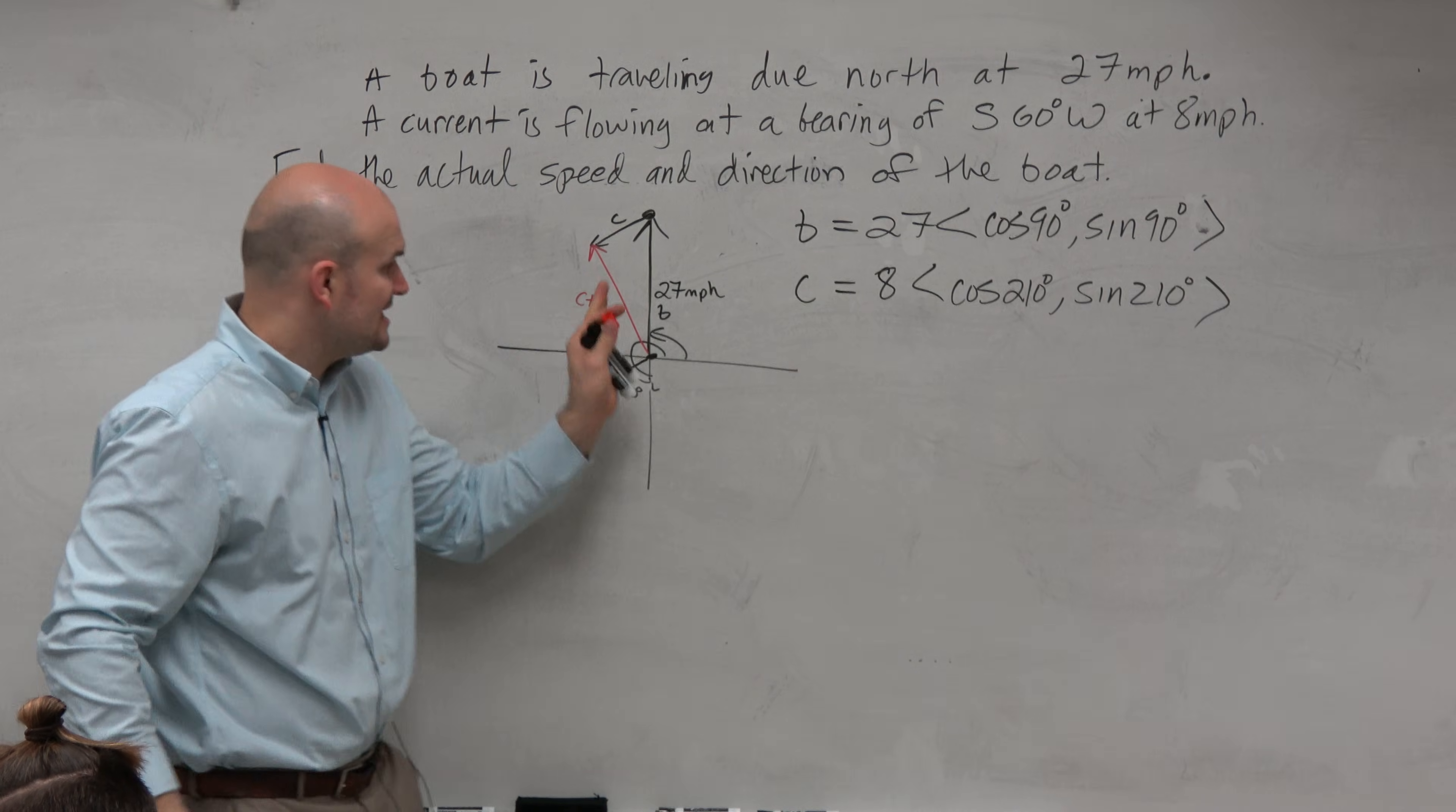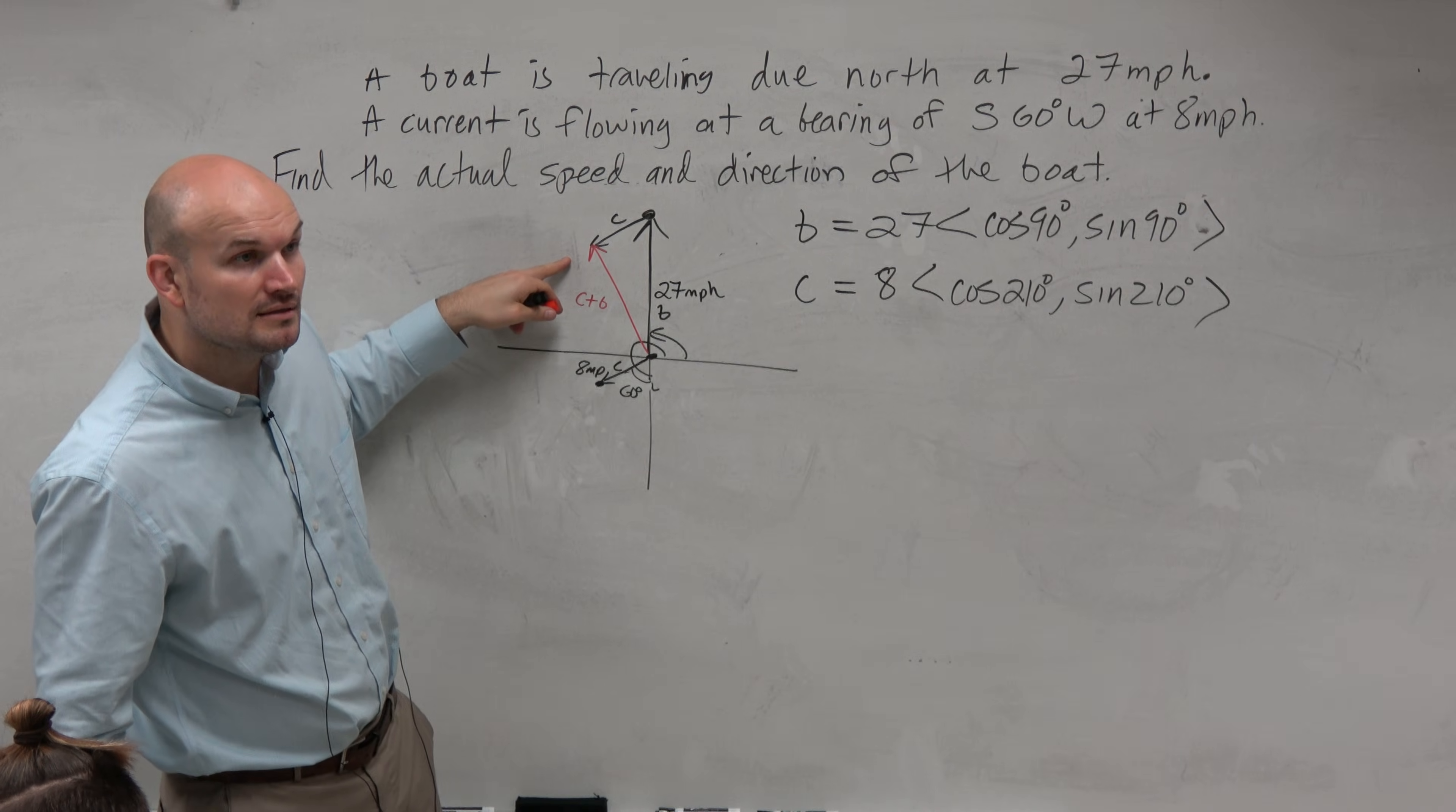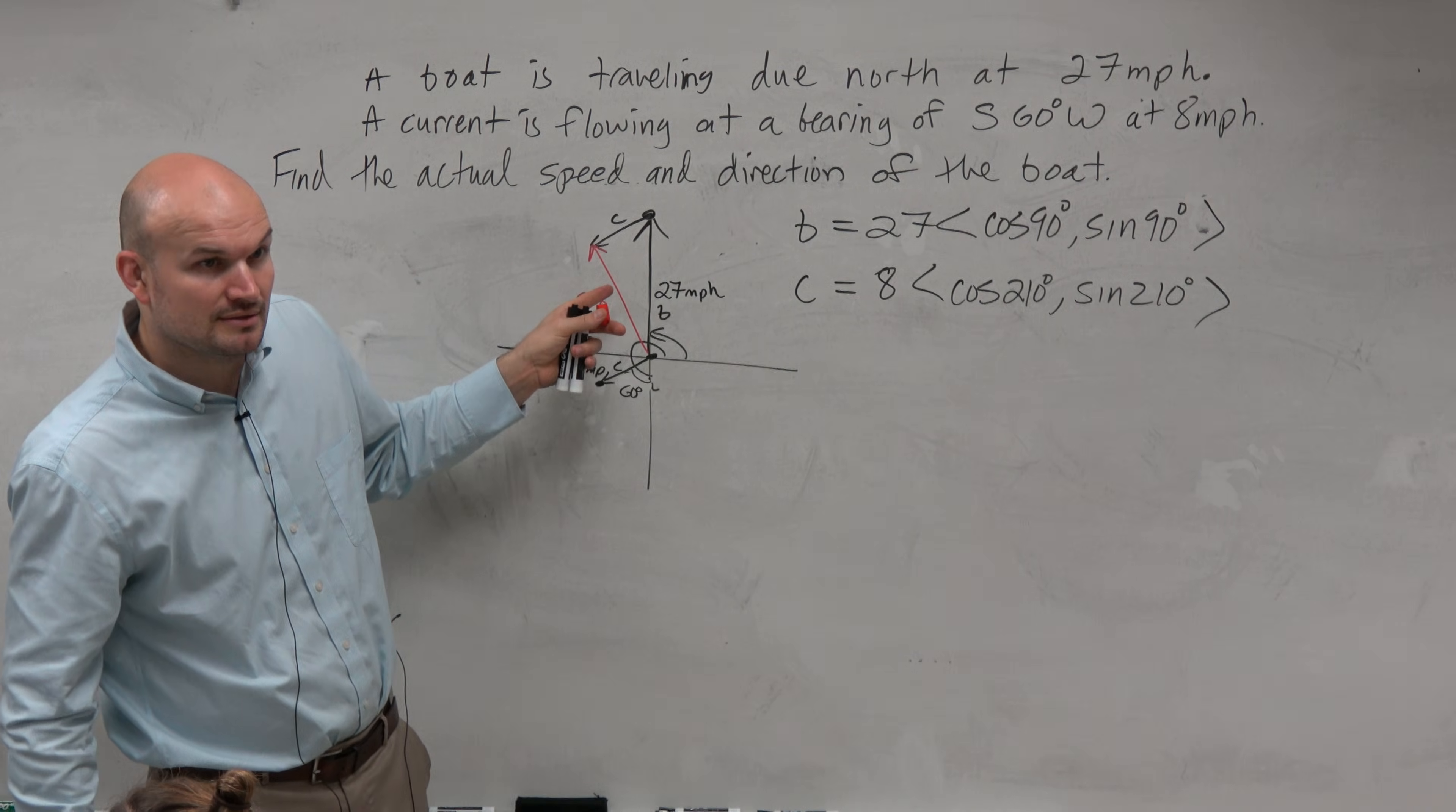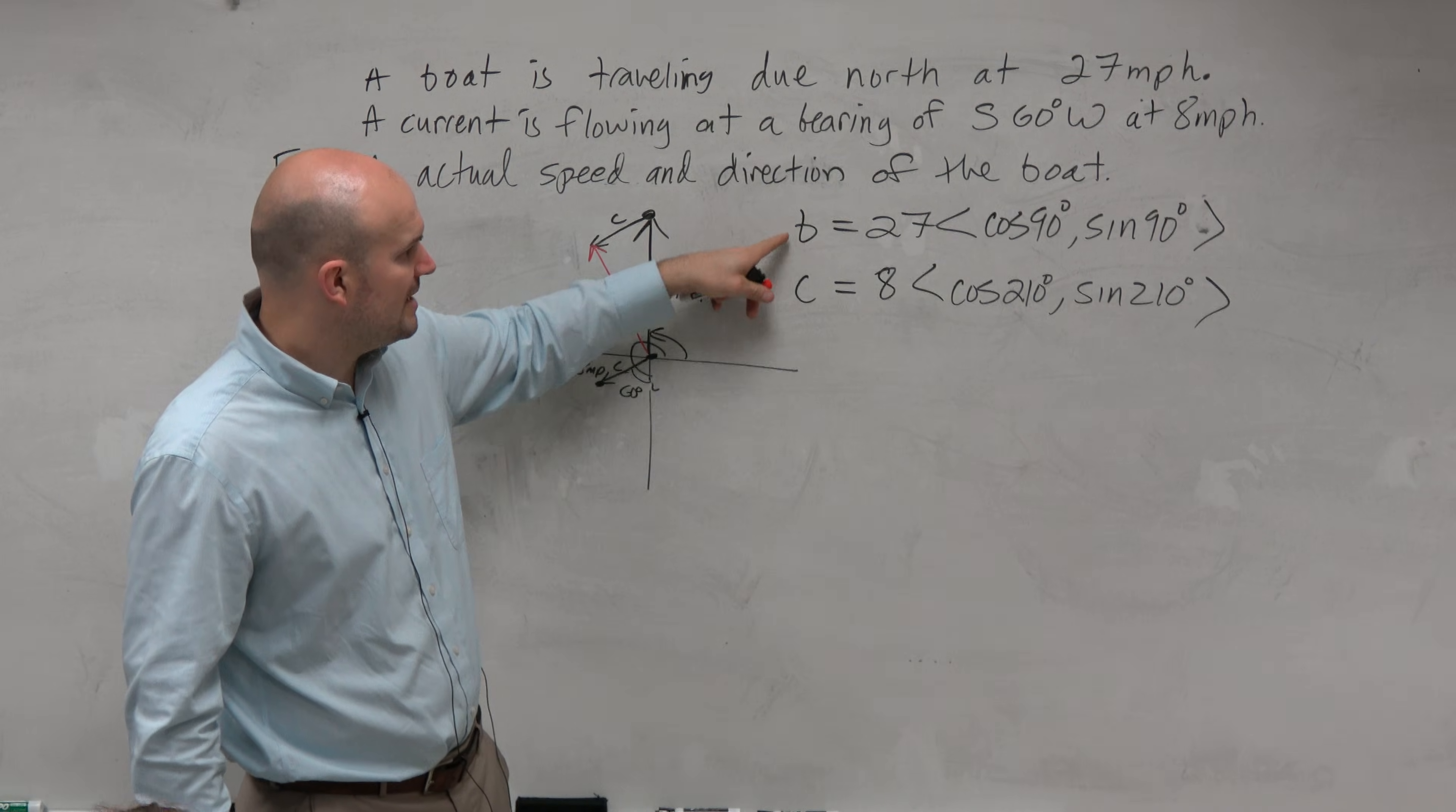And doesn't that kind of make sense? If you're driving, you're taking the boat 27 miles per hour, but you have this current going here, that you're going to end up somewhere there, unless you correct it. Unless you correct it with the steering, or with your speed, or with your throttle, you're going to be going in that direction. So we're going to assume that there's no corrections made. So let's figure out what this magnitude is.